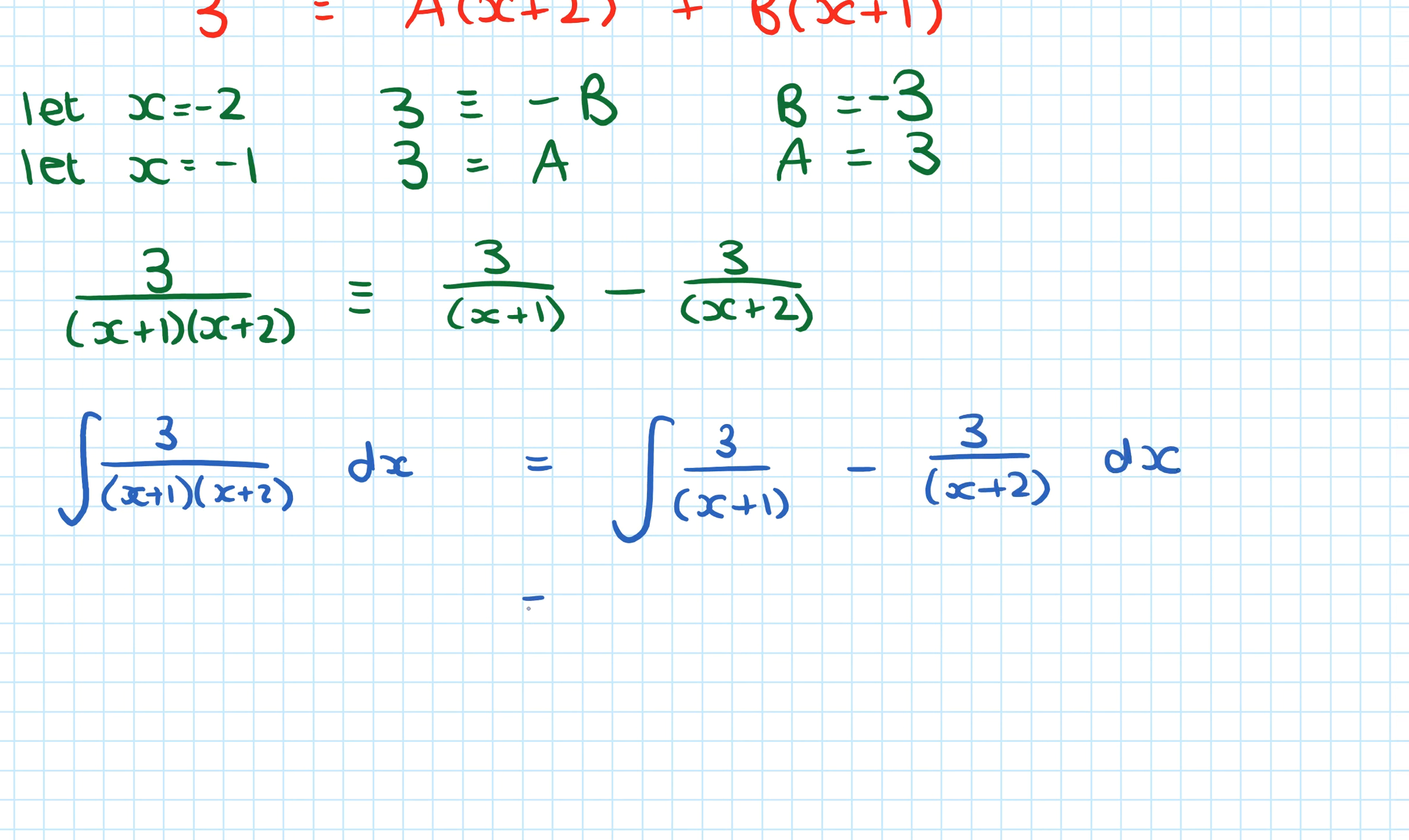And then I know how to integrate something over x plus 1. That just goes to a natural log, doesn't it? So that goes to 3 ln modulus x plus 1 minus 3 ln modulus x plus 2. And because it's an indefinite integral, we're going to have the plus C at the end.